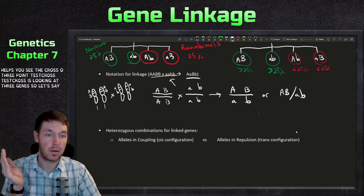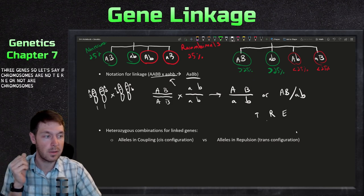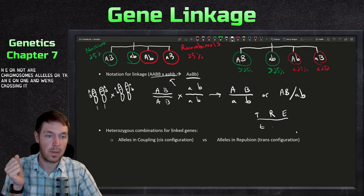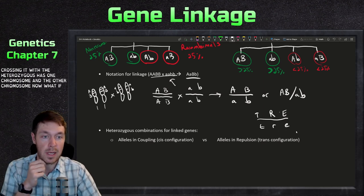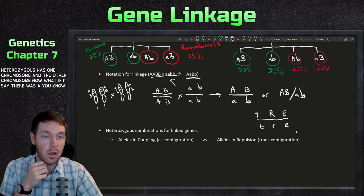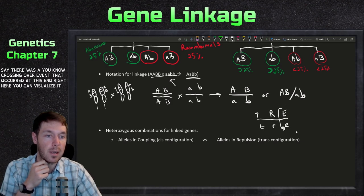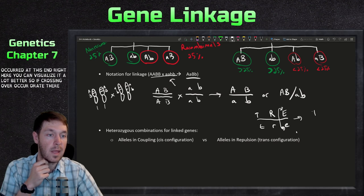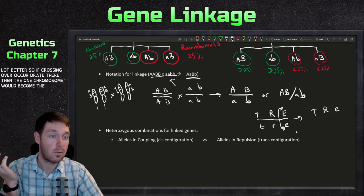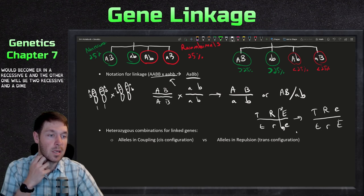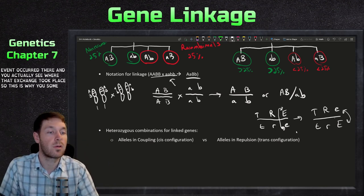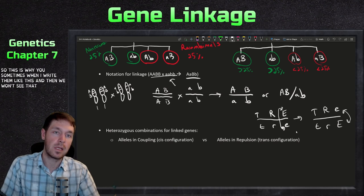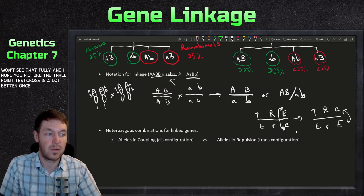The three-point test cross looks at three genes. Let's say our alleles are T, R, and E on one chromosome, crossed with a heterozygous individual. If a crossing over event occurred at one end, you can visualize it clearly - one chromosome would become, say, two recessives and a dominant E, and the other gets the opposite combination. You can actually see where that exchange took place, which is why this notation is so useful.